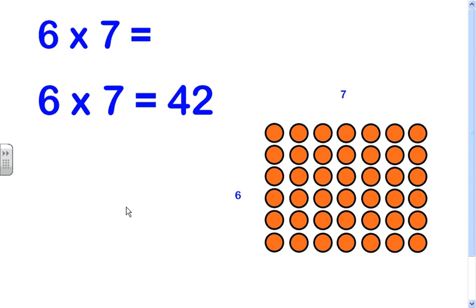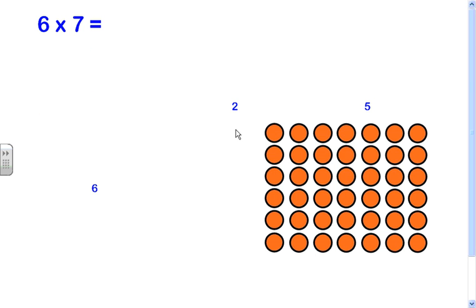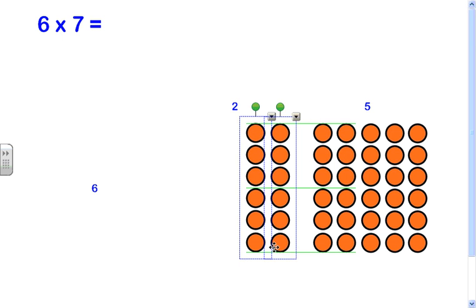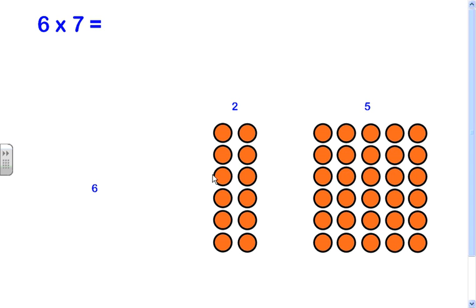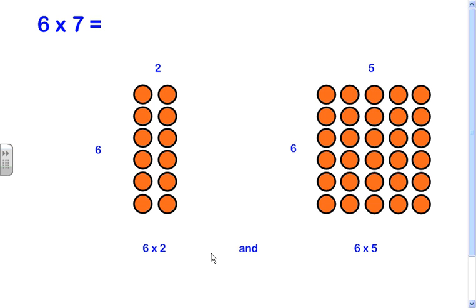Now, if you weren't really sure about that answer, maybe you could take a picture of an array and draw something that would help you out. For example, let's take 2 of those columns of 6 away so that we've got 2 different arrays now. We've got a set of 12 because 6 times 2 is 12, and we have a set of 30 because 6 times 5 is 30. And we've got both of them together.